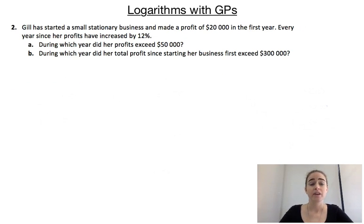Our second example is a bit more in depth. Jill has started a small stationery business, and she made a profit of $20,000 in the first year. Every year since, her profits have increased by 12%. So our first question asks us, during which year did her profits exceed $50,000? And then it says, during which year did her total profits since starting the business exceed $300,000? So for part A, we're just talking about one particular year. In that one year, we want her profits to be over $50,000. Whereas in part B, we're talking about her cumulative profit over all of the years since she first started the business.